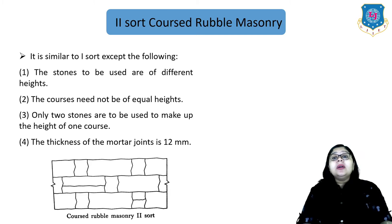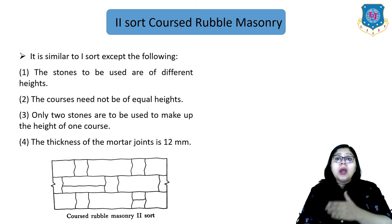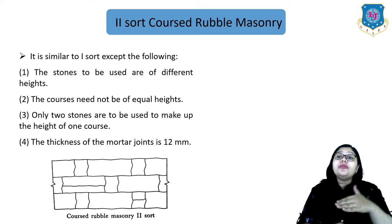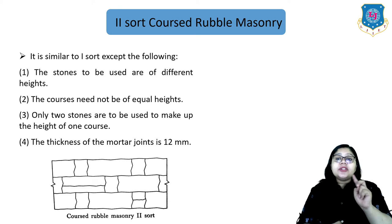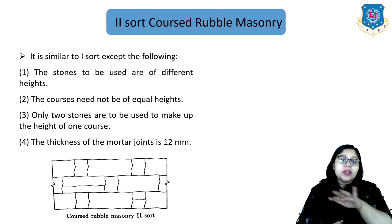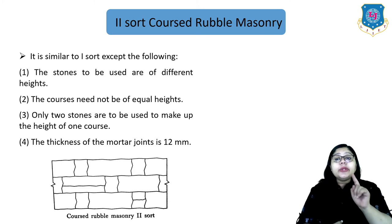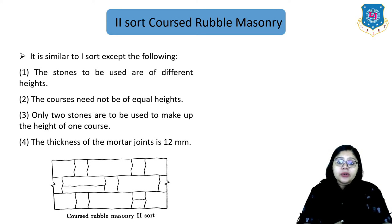The second type is the two-shot coarse rubble masonry. It is similar to type 1 but with some exceptions: the stones used are of different heights and courses need not be of equal height. Only two stones are used to make up the height of one course, and the thickness of mortar joints is 12 mm.